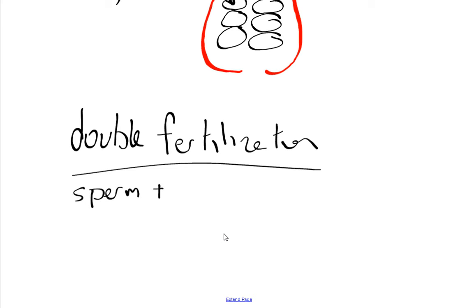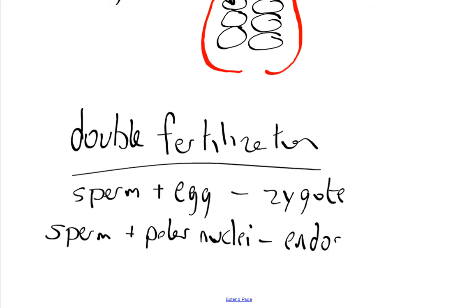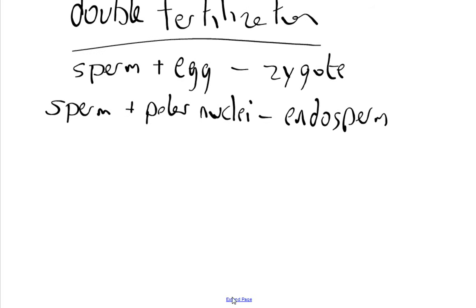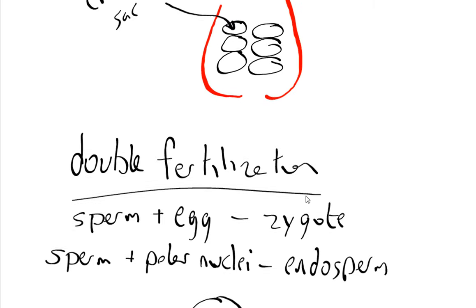This process is called double fertilization. Sperm plus egg still equals a diploid zygote. But sperm plus polar nuclei creates a new structure called endosperm. In the seed, the zygote may only take up a small portion, while the endosperm fills the rest. The endosperm provides nutrients for the young zygote as it grows and becomes those first couple of leaves — the cotyledon leaves.